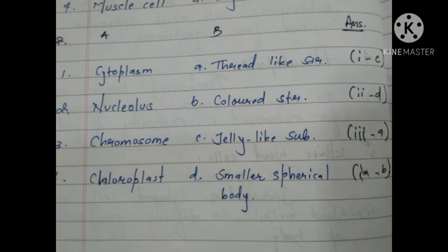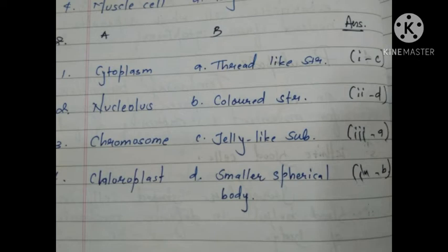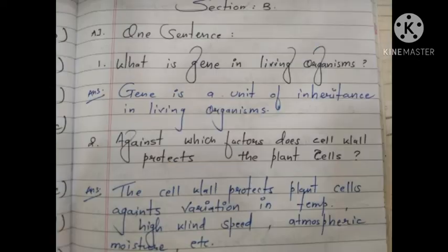Second matching exercise: Part A has RBC, cytoplasm, nucleus, chromosome, and chloroplast. Part B: A is thread-like structure, B is colored structure, C is jelly-like substance, D is smaller spherical body. Answers: cytoplasm matches jelly-like substance, nucleus matches smaller spherical body, chromosome matches thread-like structure, and chloroplast matches colored structure.